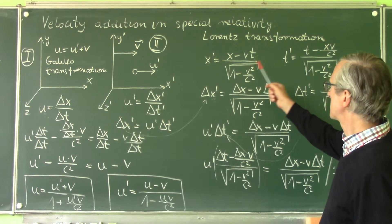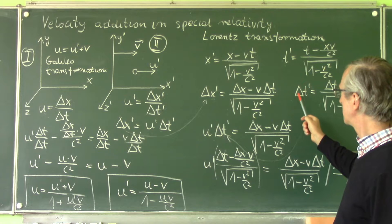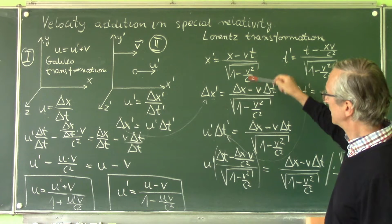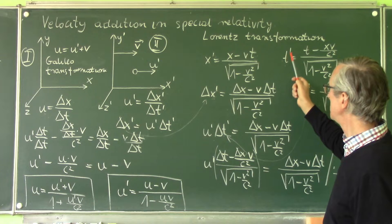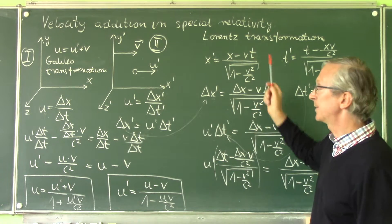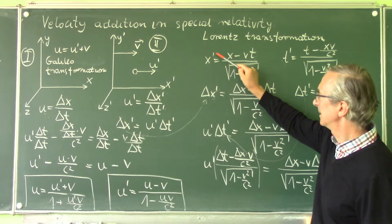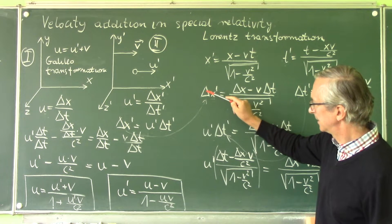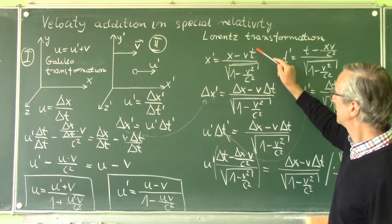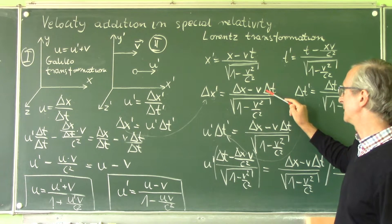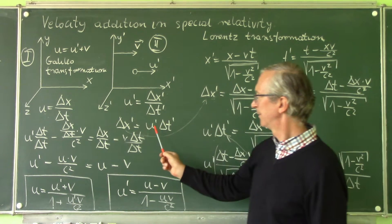From these two equations we can compute delta x dash and delta t dash. As you can see, these equations are very similar, because x dash and t dash depend on x and t linearly. So instead of x dash we have delta x dash, instead of x we have delta x, and instead of t we have delta t in both equations. Now we have four equations: one, two, three, four.